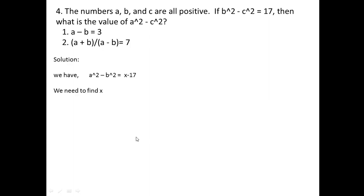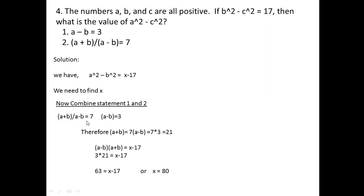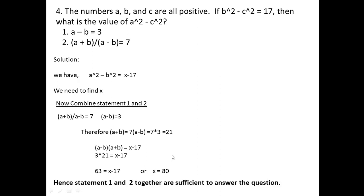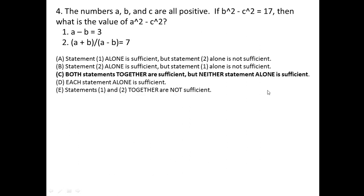Now let us combine the statements. From statement two, a + b = 7(a - b). From statement one, a - b = 3, so a + b = 7 × 3 = 21. Therefore (a - b)(a + b) = a² - b² = 3 × 21 = 63, and since a² - b² = x - 17, we get x = 80. So statements one and two together are sufficient, but neither alone is. The right answer is option choice C.